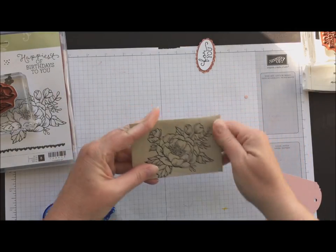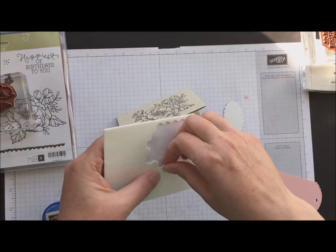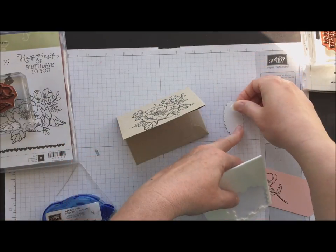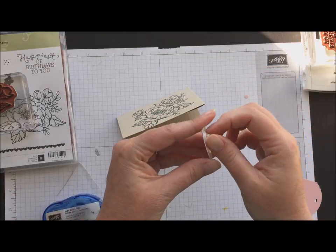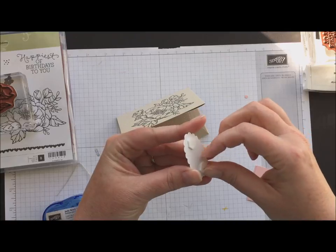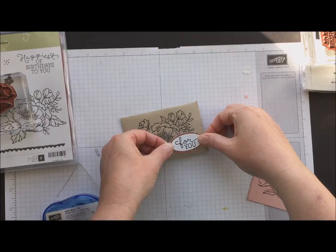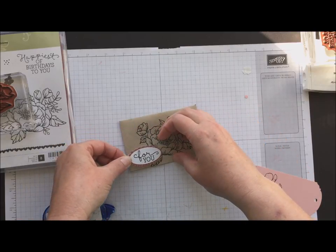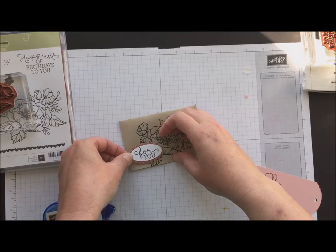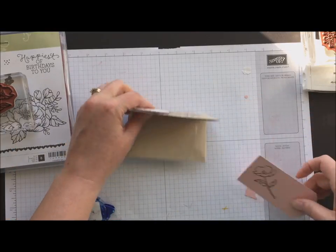And then this guy is going to go onto the front of our gift card holder with some dimensionals or in my stamp studio we tend to call them pop dots. Pull those guys off there and that's just going to go right on the front. Actually I'm going to slide it over here because my flower is a little bit off center from my sample that I did.